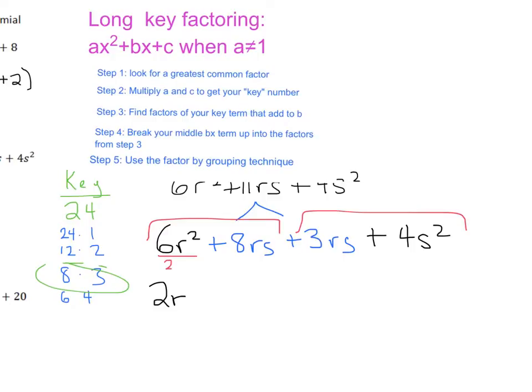That's like dividing each of these terms by 2R. And what do we have left over? When we look over here, 6 divided by 2 is going to be 3. And R² divided by R is going to give us an R to the first power. In this second grouping, 8 divided by 2 is going to give us a positive 4. What's going to happen to our R's? Our R's are going to cancel out. But we are going to have an S left over. So we are going to have 3R + 4S in this first grouping.